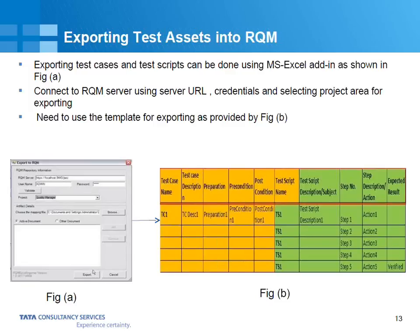This is a very important feature of RQM: exporting test assets into RQM. Not everyone is using a test management tool. Some teams may be using spreadsheets, and when your system grows it becomes very complex to maintain all these spreadsheets and you want to move to a test management tool like RQM. Then how do you migrate your entire data into RQM?